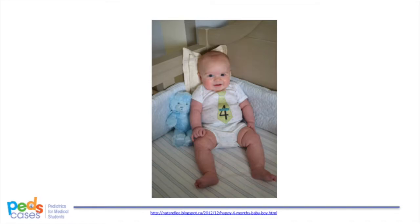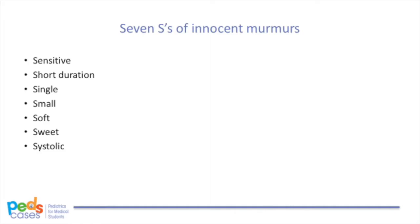Let's quickly remind ourselves of some key points about heart murmurs. Before getting into details of the case, let's do a brief review of how we distinguish innocent murmurs from pathological ones. A good mnemonic for features of innocent murmurs is the seven S's: sensitive, short, single, small, soft, sweet, and systolic. I will explain each of these briefly.